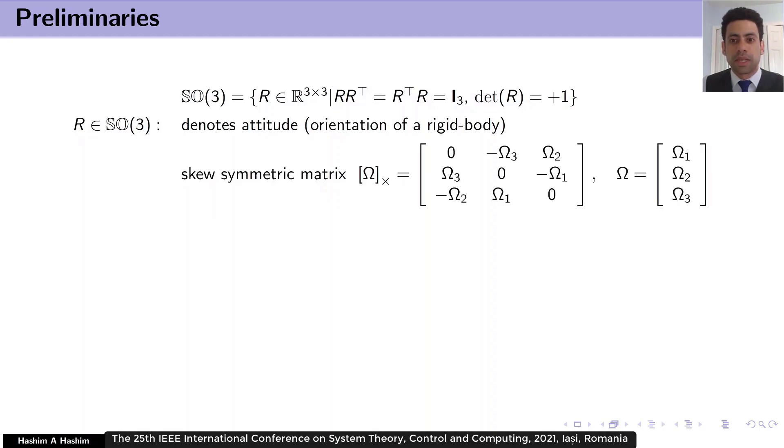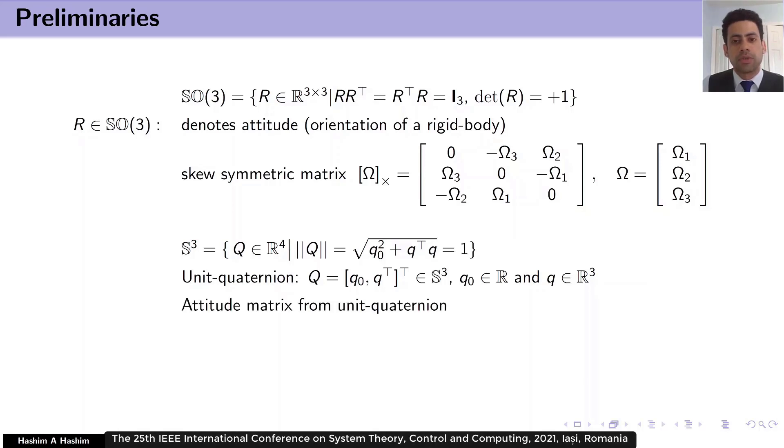Here is a skew symmetric matrix representation. So if we have a vector of 3 elements, this is the skew symmetric representation of this vector. And S^3 is the set of vectors that belongs to R^4, where the norm of the vector in this set always equal to 1. So the vector in this set is called as a unit quaternion. It includes two components Q_0 and Q, where Q_0 belongs to R and Q belongs to R^3. The attitude of a rigid body or orientation of a rigid body can be obtained from unit quaternion by this form. And here is the equilibrium point.